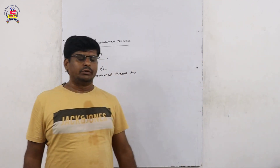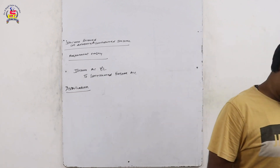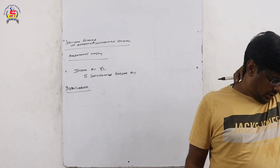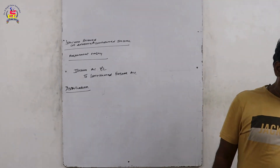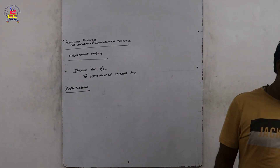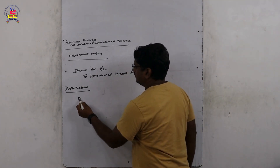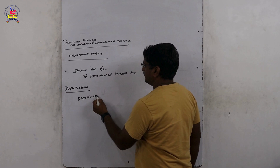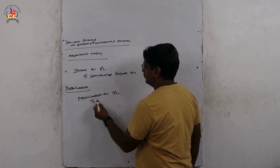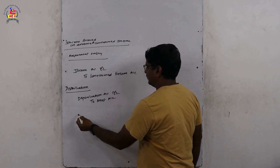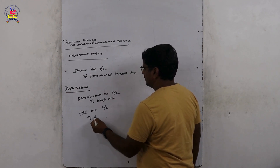Subtract from the respective asset. The entry is: Depreciation Account Dr. To Asset. It is shown on the Profit and Loss account.